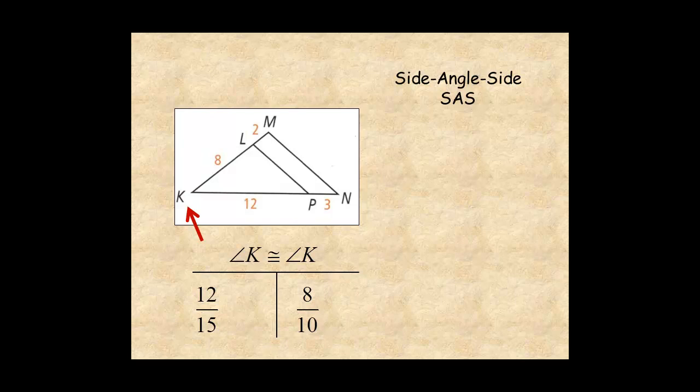Since both ratios are equal to 4 over 5, the triangles are similar.